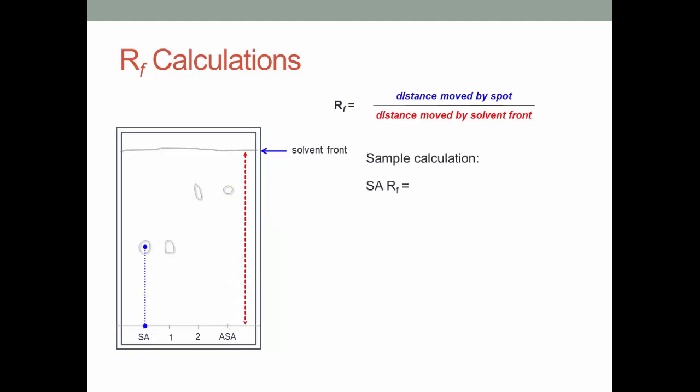For example, if we wanted to calculate the RF value for the SA, we would take the distance moved by the spot, 33.8 mm, and divide it by the distance moved by the solvent front, in this case 65.2 mm, giving us an RF value for SA of 0.518.